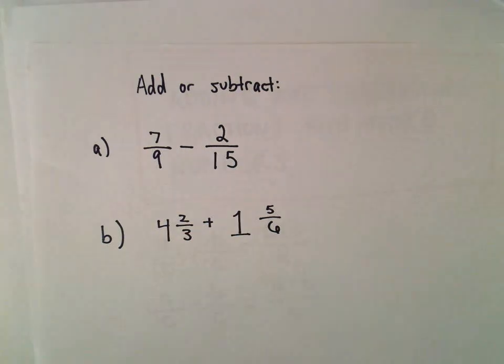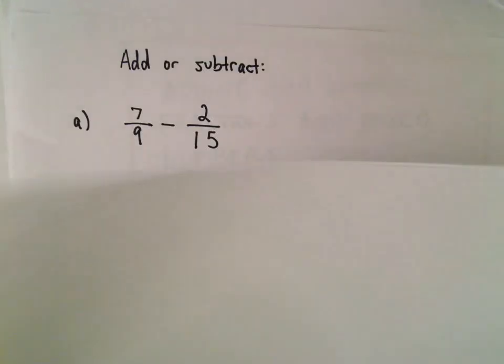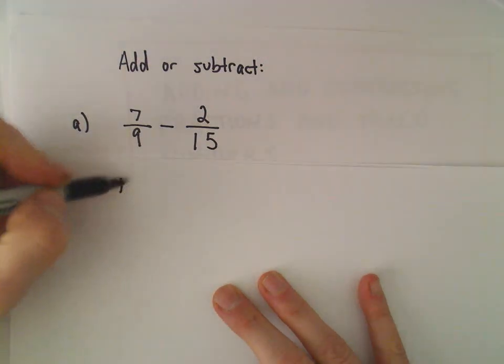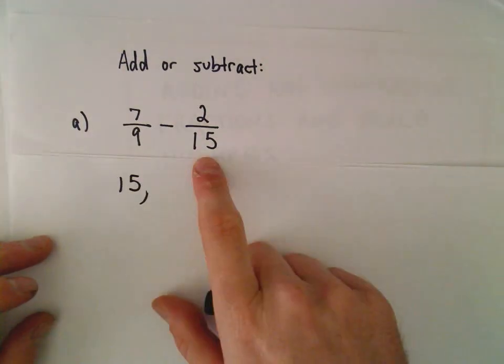So to do this subtraction, we're going to have to get common denominators. The way that I'm going to find the least common denominator is I look at multiples of the largest one.